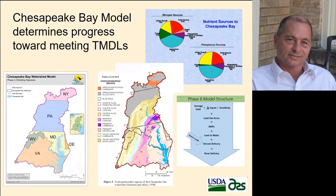The Chesapeake Bay model is our reality when it comes to determining the progress of the seven states that are part of the Chesapeake Bay watershed. It's the model that determines how much progress the states are making towards meeting these total maximum daily loads. Approximately a little less than 40 percent of the nitrogen that gets to the Chesapeake Bay is coming from agriculture.